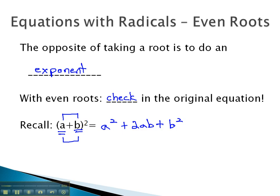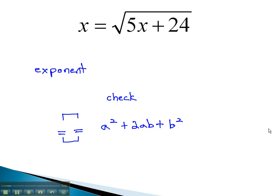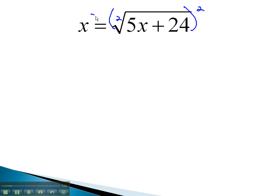Let's take a look at some examples where we solve radicals with even roots. In this problem, we have a square root. To get rid of a square root, we must square both sides. This gives us x squared equals 5x plus 24, since square and square roots are inverses.